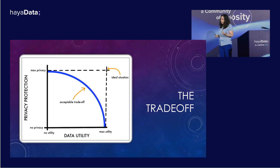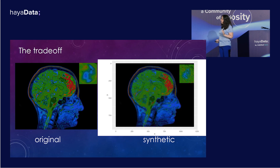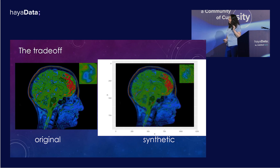In healthcare, the metrics are more documented. There are more industry standards. In insurance, it's not so easy. And to illustrate this trade-off, let's take a look at these two images here. The one on the left is an original image of a brain scan. And what is an image? It's a tabular data set that contains millions of rows and five columns — XY for the location of the pixel and RGB for the color of the pixel.